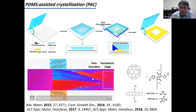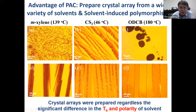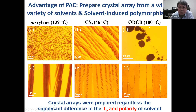After developing this technique, we started to study the transistor performance of C60 and look into how its crystal morphology affects performance. Here is the crystal array we grew based on our PDMS-assisted crystallization method. Because we use PDMS to absorb the solvent and cause supersaturation, we can use solvents with very different boiling points, and we can always turn randomly oriented crystals into a well-aligned crystal array. This advantage gives us the ability to study solvent-induced polymorphism in this semiconductor material.